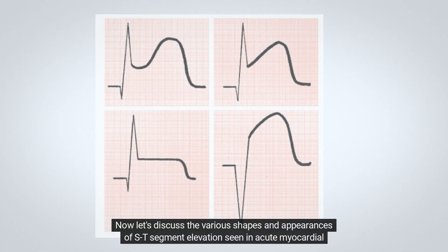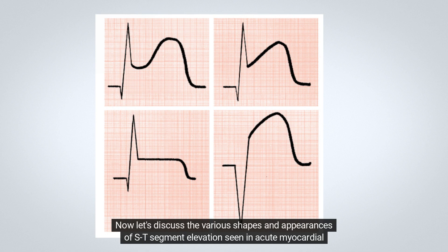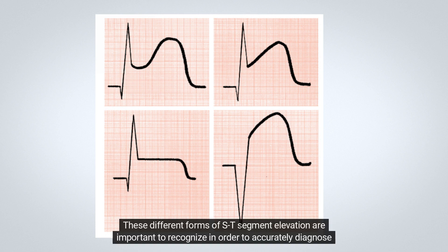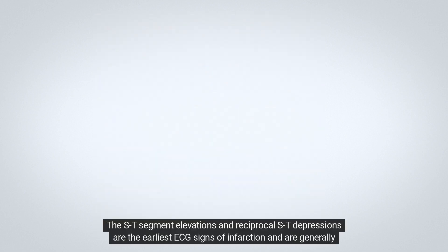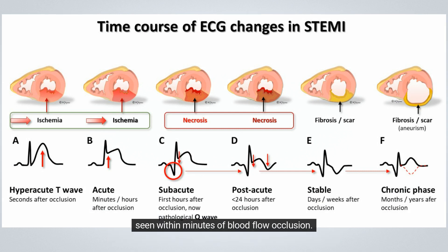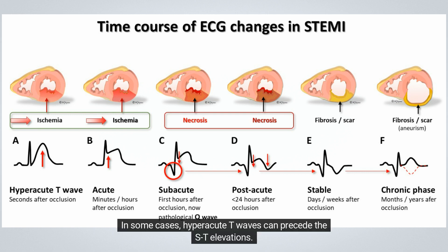Now let's discuss the various shapes and appearances of ST-segment elevation seen in acute myocardial infarction. The ST-segment may be plateau-shaped, dome-shaped, or obliquely elevated. These different forms of ST-segment elevation are important to recognize in order to accurately diagnose acute myocardial infarction. The ST-segment elevations and reciprocal ST depressions are the earliest ECG signs of infarction and are generally seen within minutes of blood flow occlusion. Tall, positive, or hyperacute T waves may also be present at this time, and in some cases hyperacute T waves can precede the ST elevations.